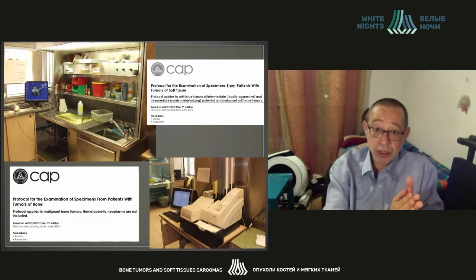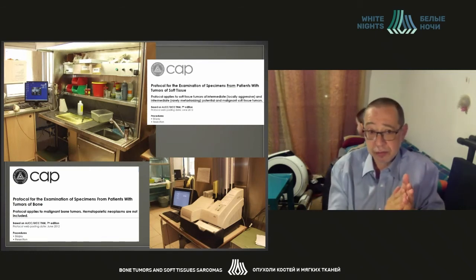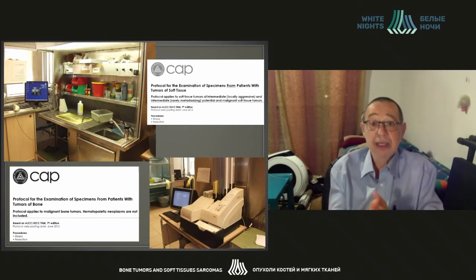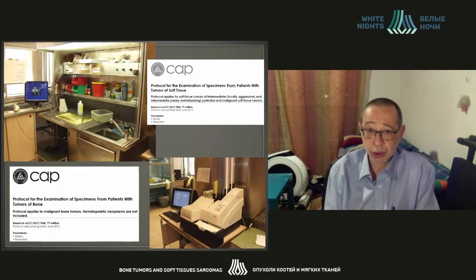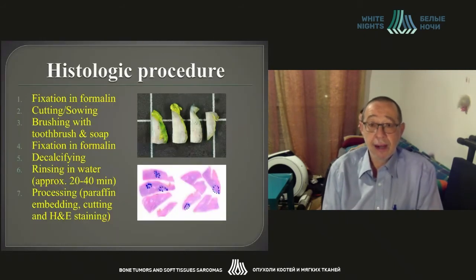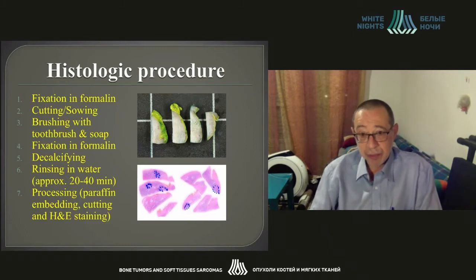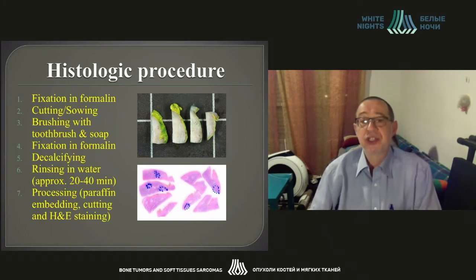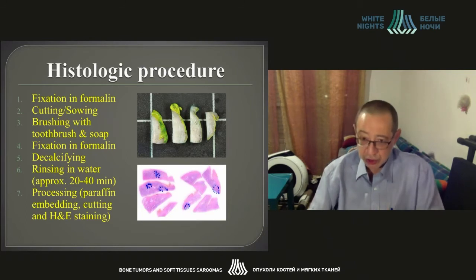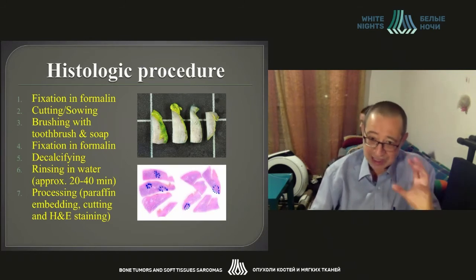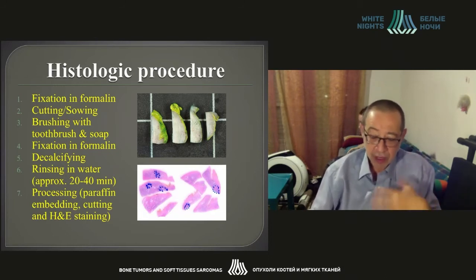This is how the grossing room looks like, and this is our machine for printing cassettes — our fellows and residents work on it. As I've already mentioned, margin delineation is utterly important. Within the process of preparing the sample, it still happens within the pre-analytical stage — the eye of a pathologist, of a specialist, has not yet started working with the specimen.